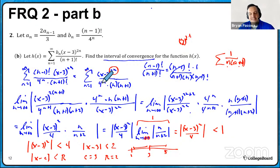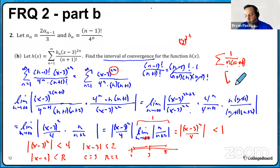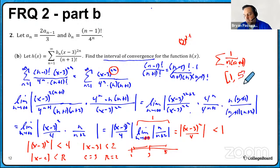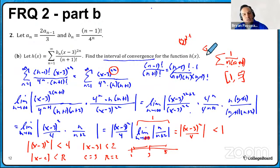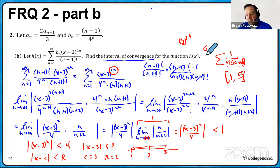Testing x=5: (5-3)^(2n) = 2^(2n) = 4^n, which again cancels with 4^n in the denominator, leaving exactly 1/(n(n+1)) — the same result as x=1. So both endpoints converge. The interval of convergence is [1, 5], inclusive on both sides. On the exam, show your work — plug in each endpoint explicitly and state which test you used and why it converges.